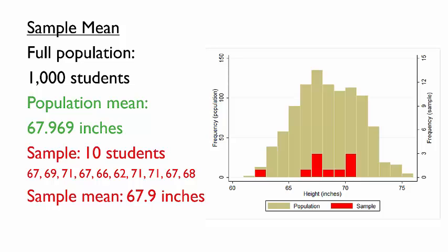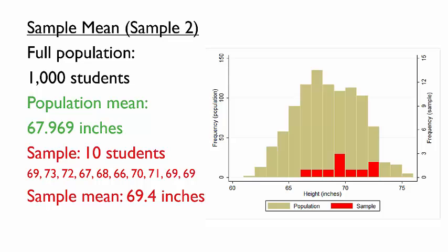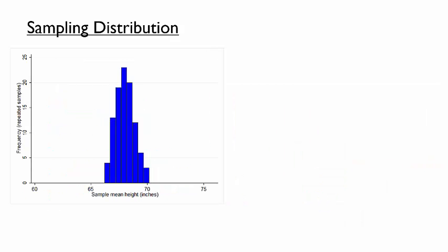This is where the thought experiment comes in. What if we had selected a different sample? A different random sample of 10 students has a sample mean of 69.4 inches — a bit higher than the population mean, as by chance the sample included more students with above average height. A third random sample has a mean height of 66.9 inches, a bit below the population mean. We could get a sense of this by considering how the sample mean varies across many samples. If we drew 100 samples of 10 students and found the sample mean height in each case, we would get a distribution called the sampling distribution.